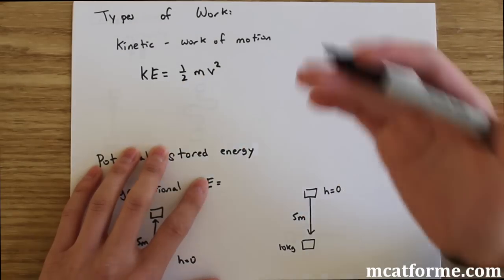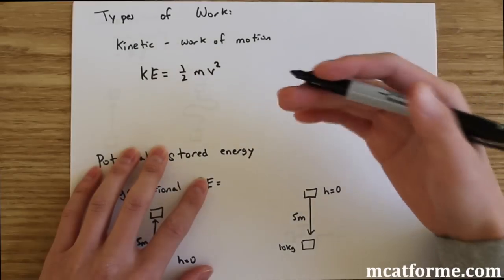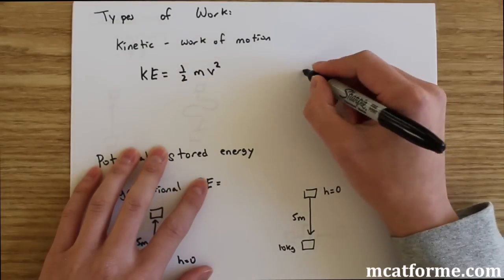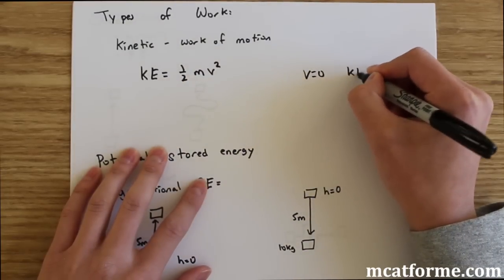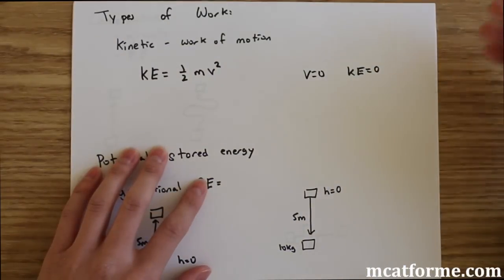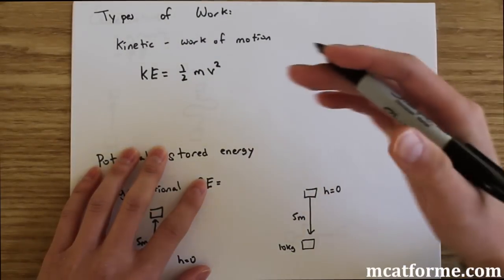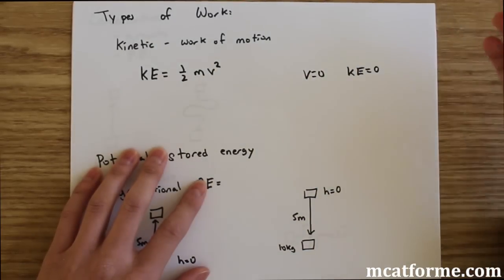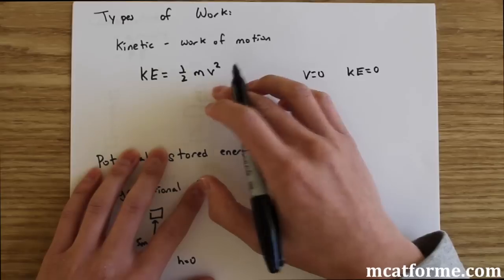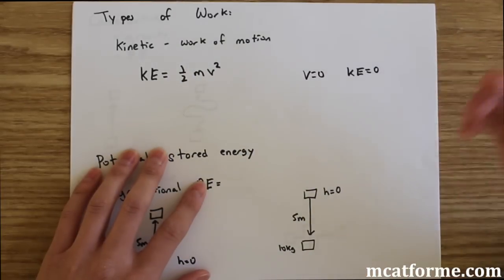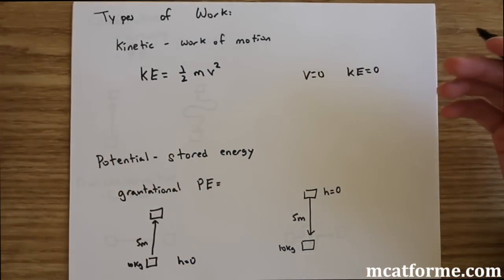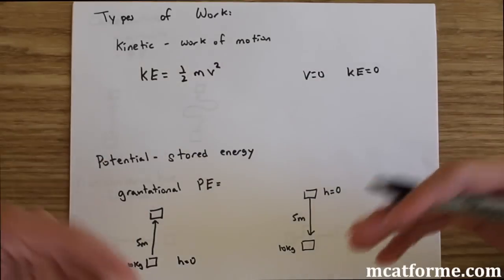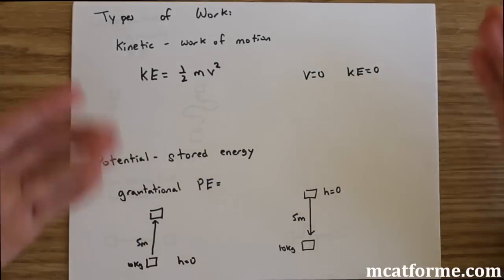Something has to be moving in order to have kinetic energy — if v equals zero, kinetic energy is going to be zero. Work is measured in units of joules, which are a unit of energy, so all types of work are energy. Note that v doesn't always have to be given directly; you may need to solve for velocity using projectile motion equations.